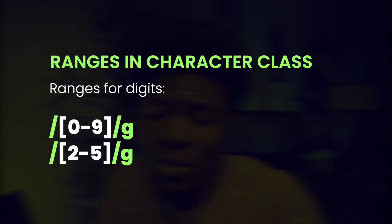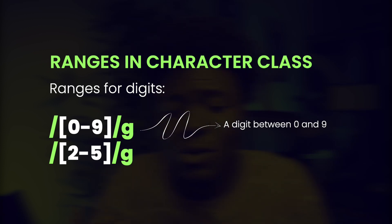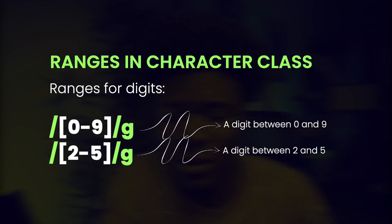Ranges are not only for letters — you can also apply ranges to digits. For example, 0 to 9 matches all digits from 0 to 9. You can also use partial ranges like 2 to 5, 4 to 6, as many as you want.